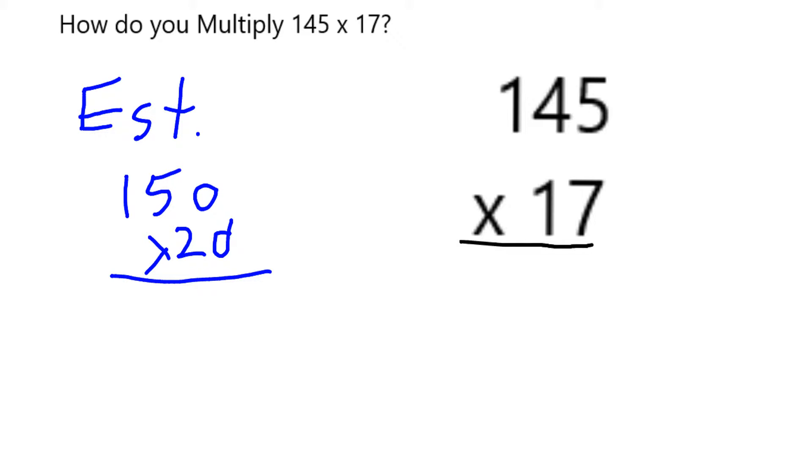These are easy to multiply. 150 times 10 is 1,500, so times 20 would be about 3,000.